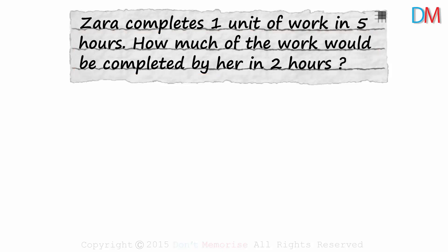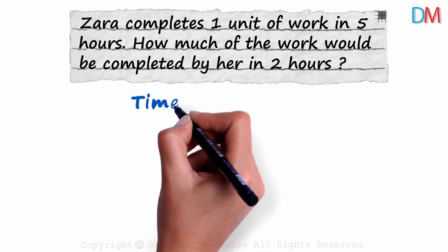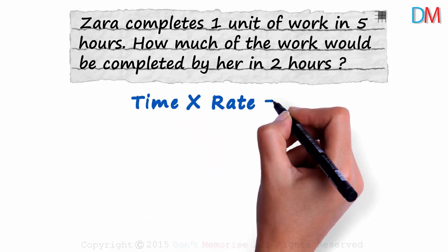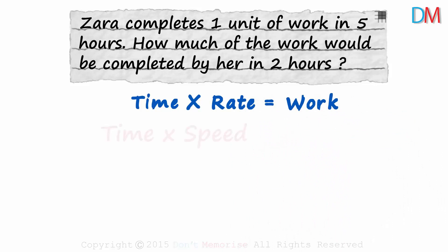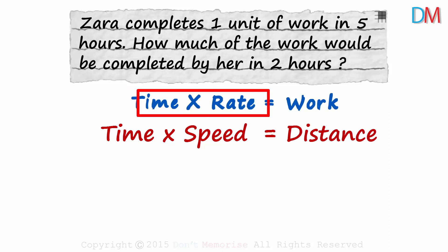To solve this, we need to understand the relation between time and work. Time multiplied by the rate at which work is done gives us the amount of work done. It's similar to time multiplied by speed gives us the distance covered. Here the time multiplied by the rate will give us the work done.